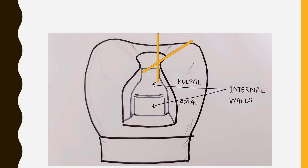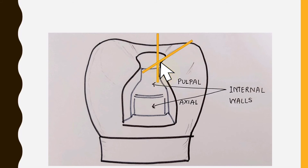To measure the cavo-surface angle: imagine a line from the prepared wall intersecting with a line that projects from the external surface of the tooth. The angle formed is the cavo-surface angle. When two straight lines intersect, the opposing angles are equal — so whatever the measurement of that opposing angle is, that is the measurement of the cavo-surface angle.